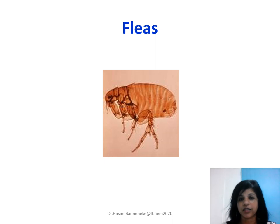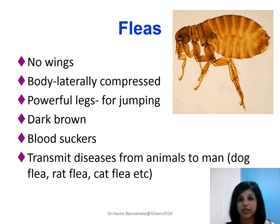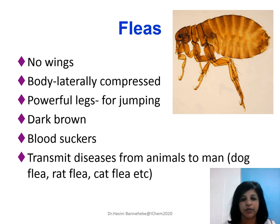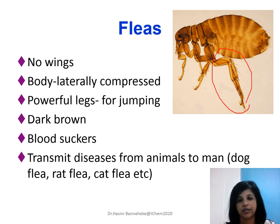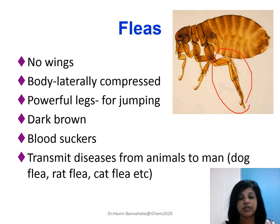Let's move on to another vector: fleas. These vectors have no wings. Their body is laterally compressed — side by side it is compressed. They have bigger, stronger legs because they move by jumping. They are dark brown in color and they are blood suckers. They transmit diseases from animals to humans. Fleas are mostly dog fleas, cat fleas, rat fleas, etc.